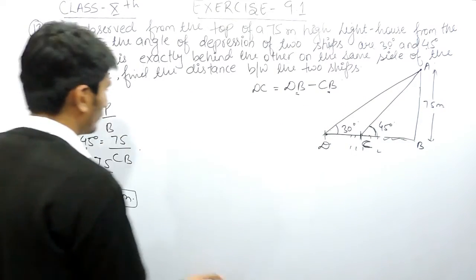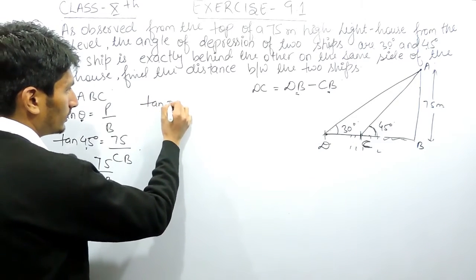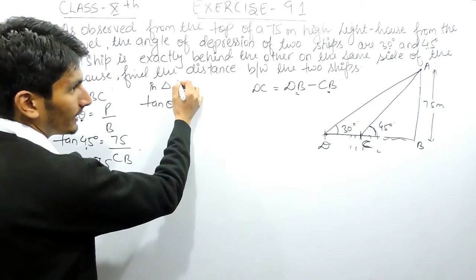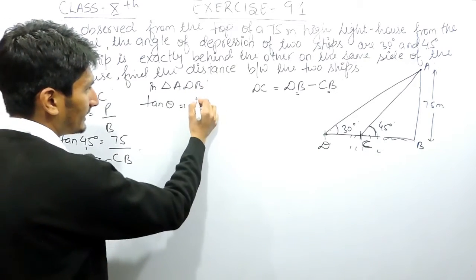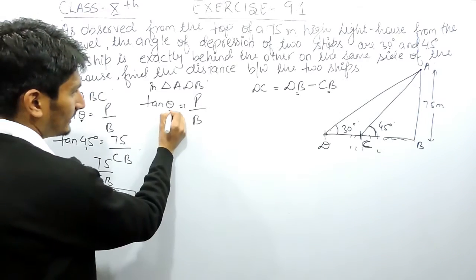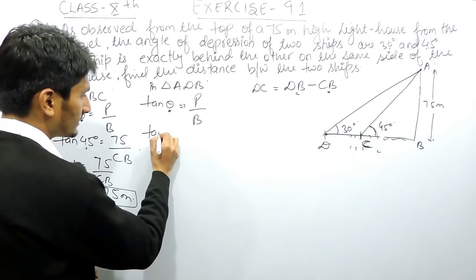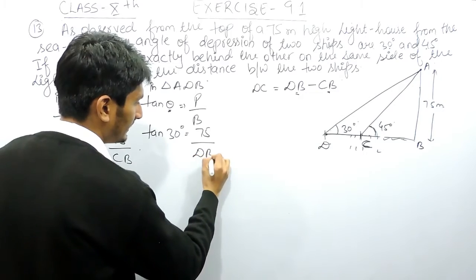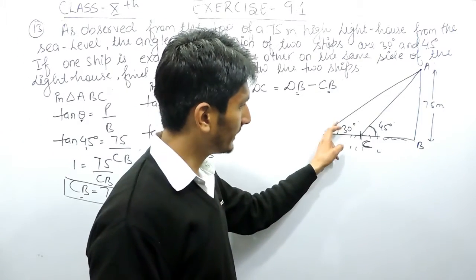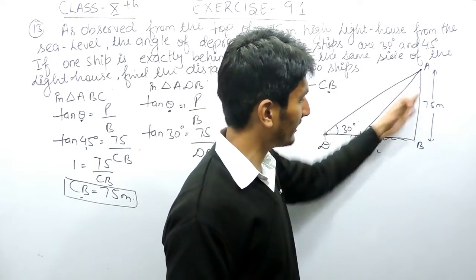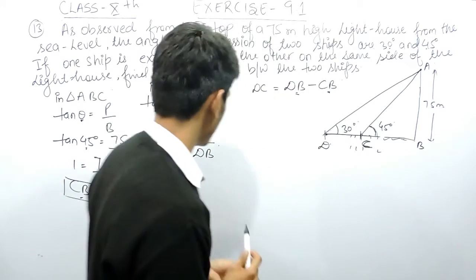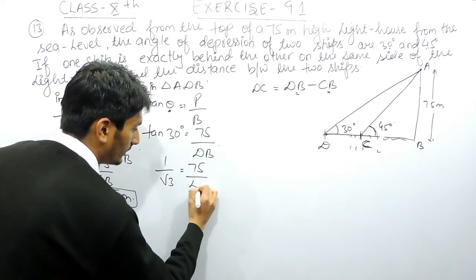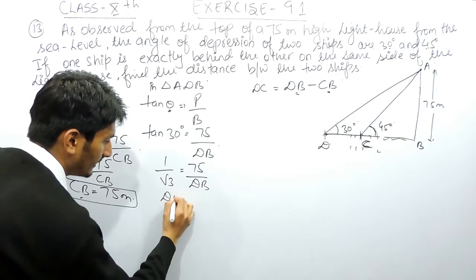Now I have to find DB. For finding DB, I use the ratio for tan theta in the bigger triangle ADB. In triangle ADB, tan theta again equals perpendicular upon base. In this bigger triangle, theta is 30 degrees. The perpendicular remains the same — 75 meters — and the base is DB. The value of tan 30 degrees is 1 upon root 3, so 1 upon root 3 equals 75 upon DB.